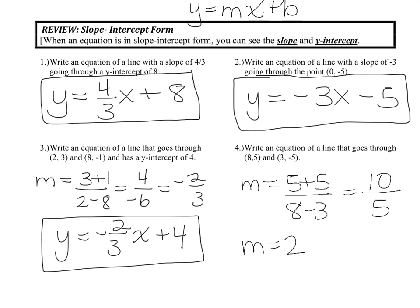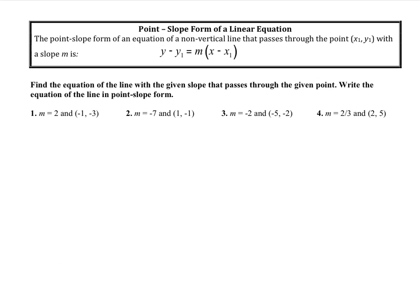There is another form — point-slope form. Point-slope form gives you a point, not necessarily the y-intercept, but an ordered pair on the line, and the slope. The form is y minus y1 equals m times (x minus x1). The point is (x1, y1) and the slope is m. Whatever number goes in for m is the slope, and y1 and x1 are the coordinates of the point.